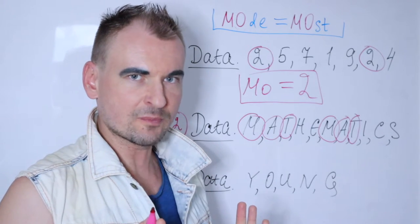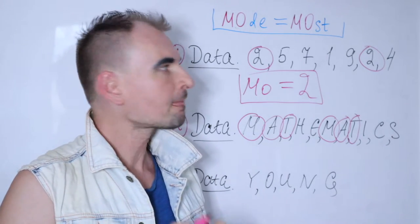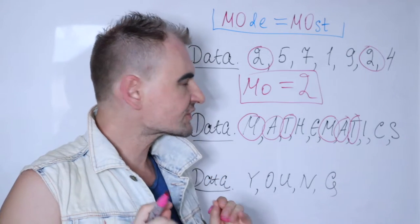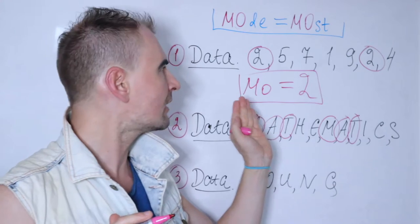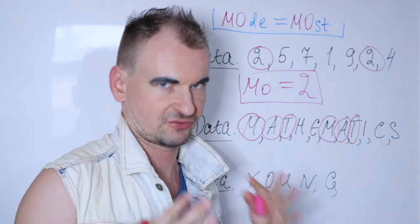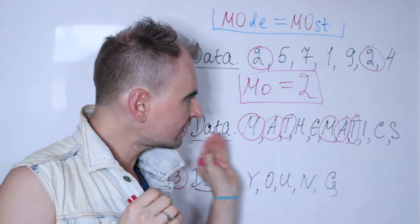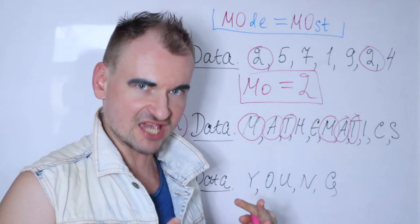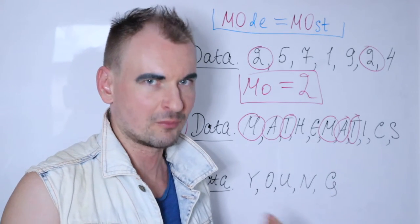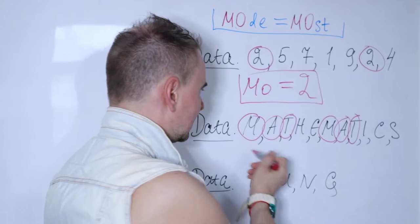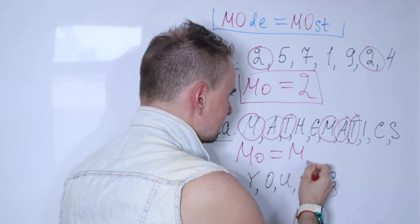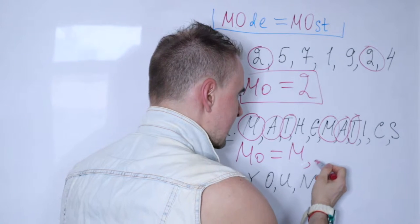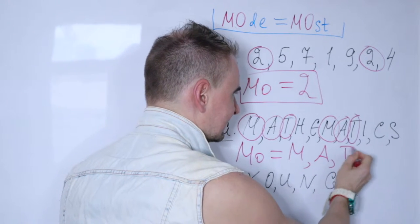Yes, you can. Well, to be perfectly frank with you, sometimes you have more than one mode. So the first example shows you that mode is one, but in this case, yes, you have more than one mode. You could just write it down, so your mode in this case equals M, A, and T.